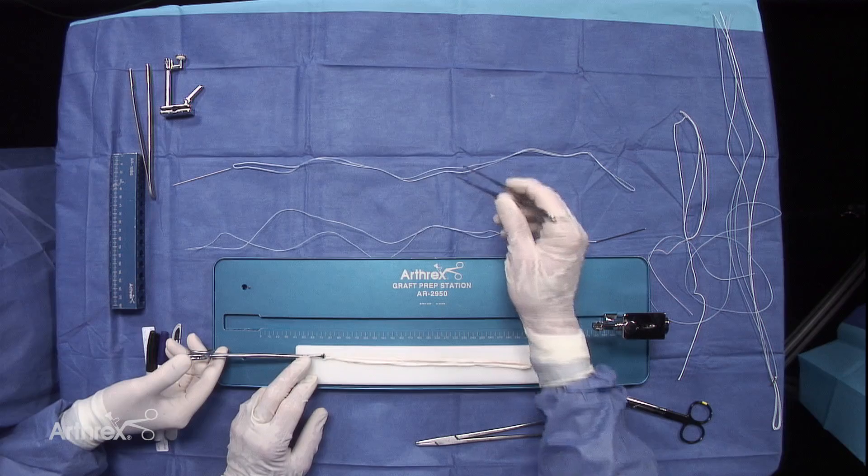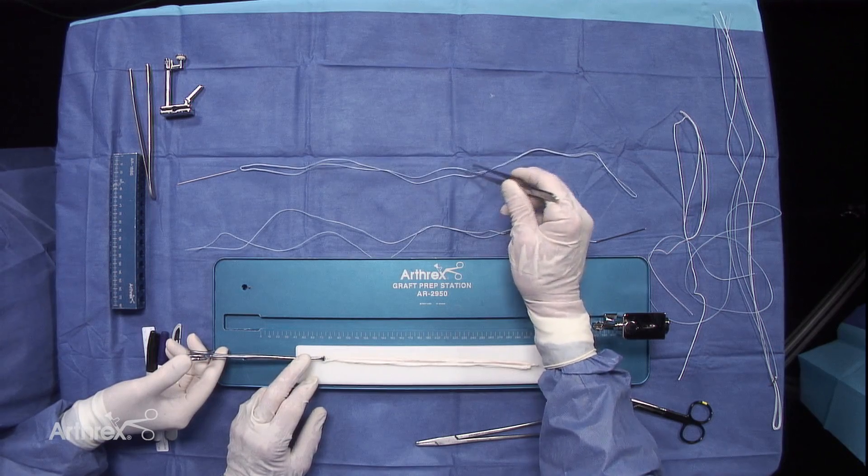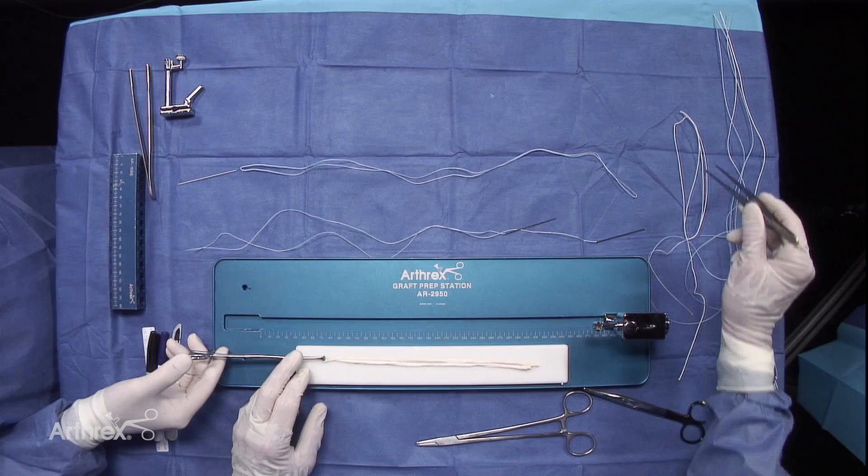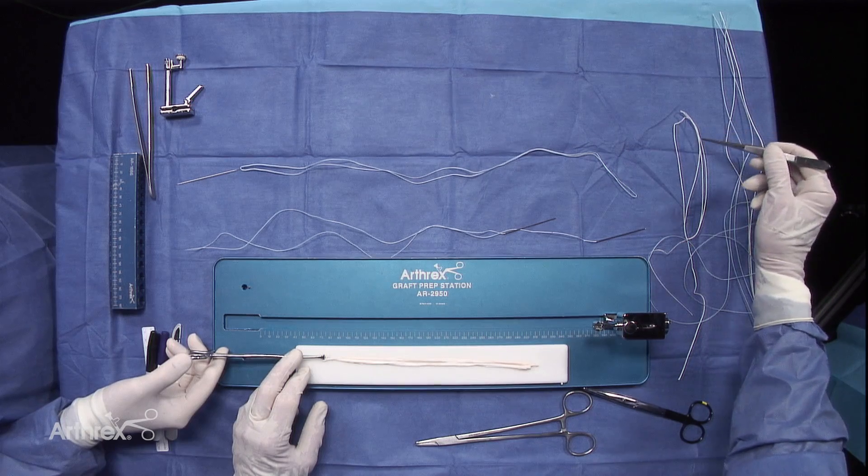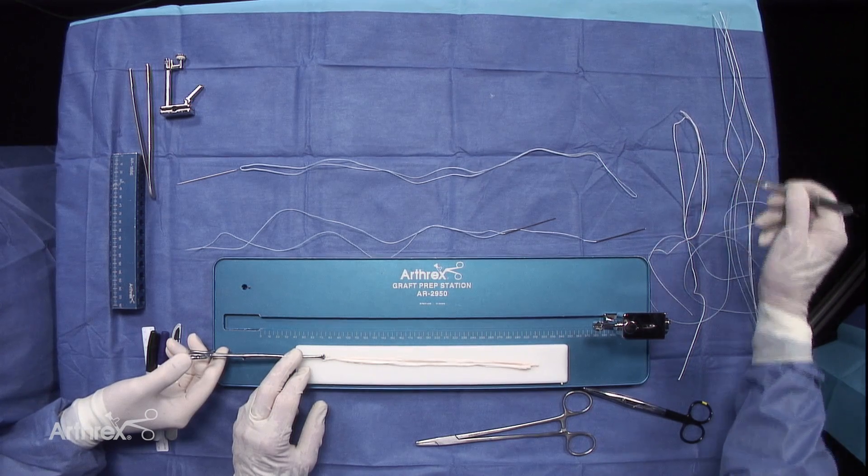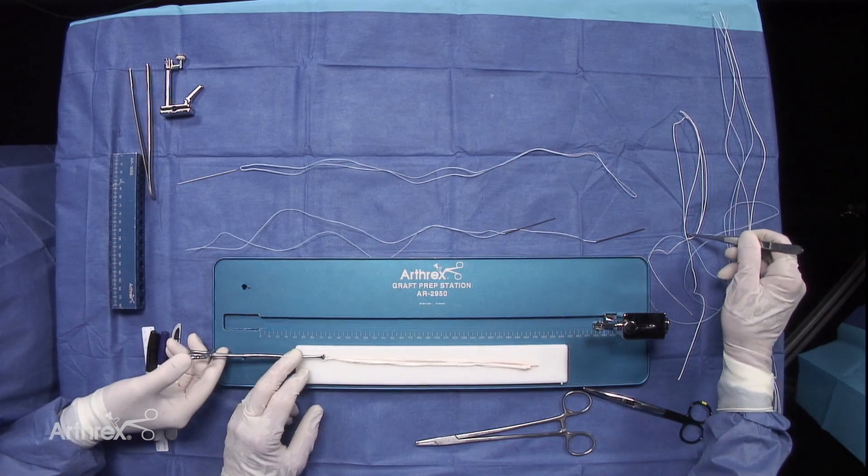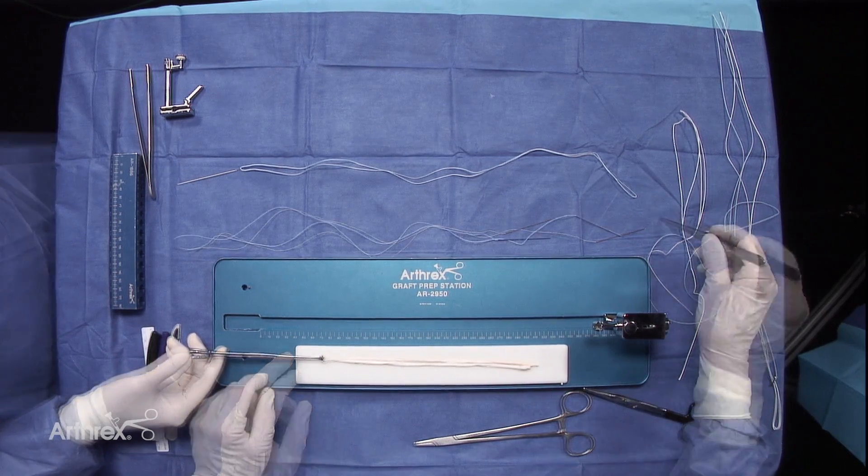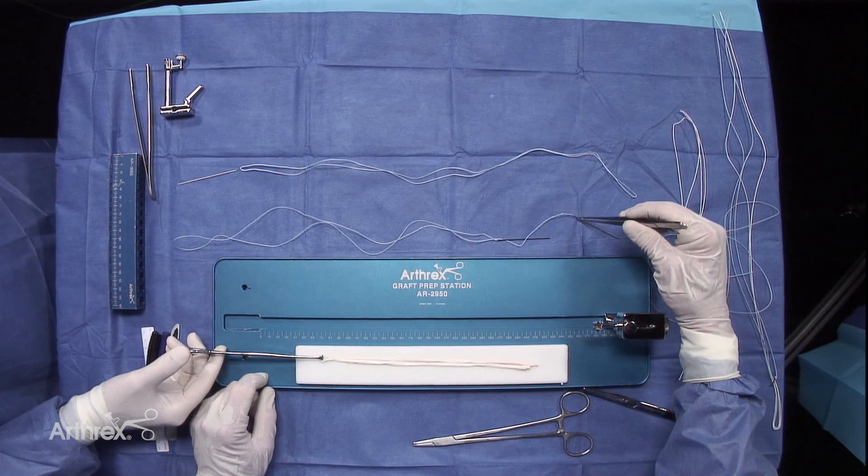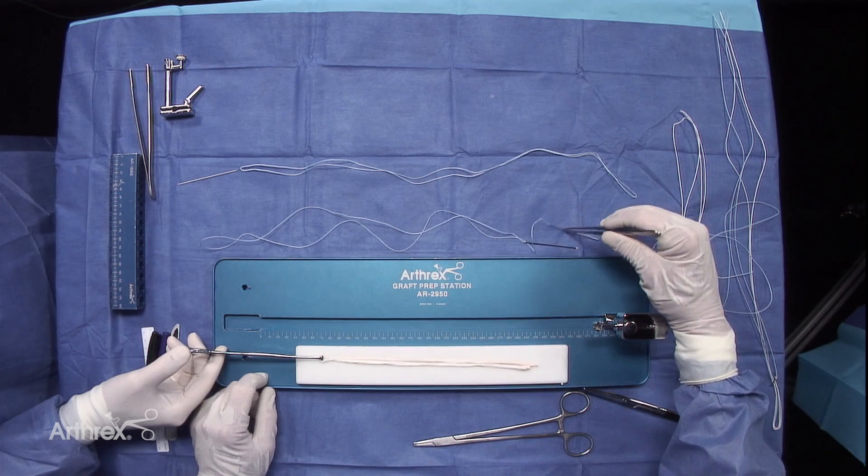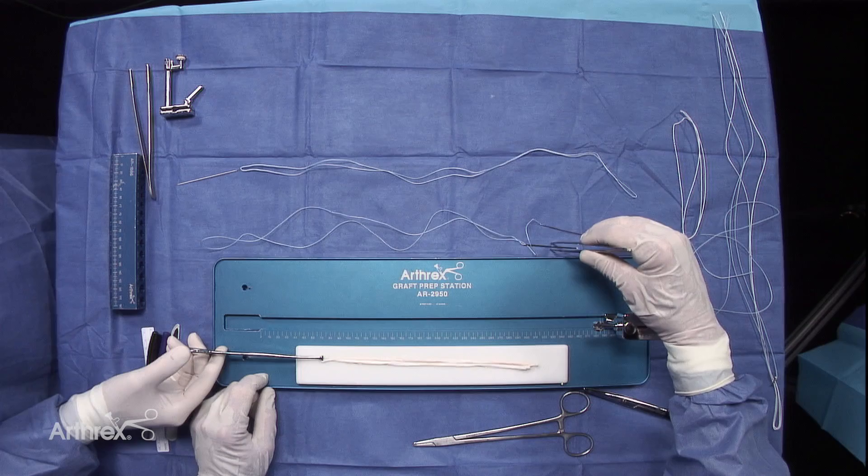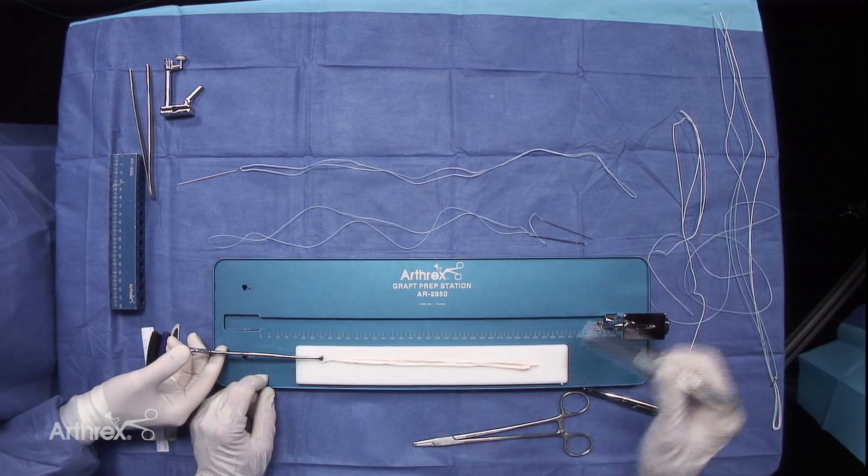To accomplish this, we're going to use the fiber loop, and we have the tightrope, which is going to be on the femoral side. We have the tightrope with the button, the ABS system, which is going to be on the tibia, and then we have a number two fiber wire with two independent needles, which is very important in the final construct of making this 6-strand graft.